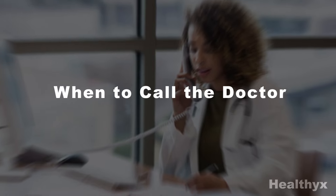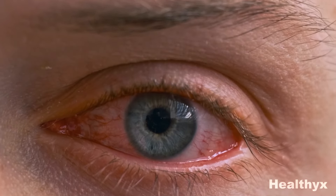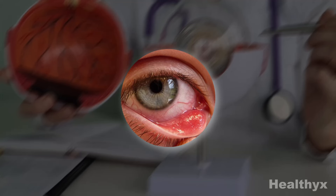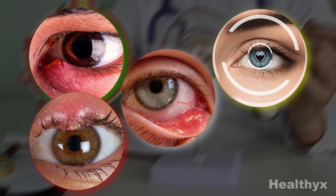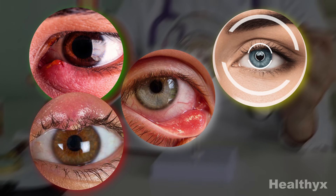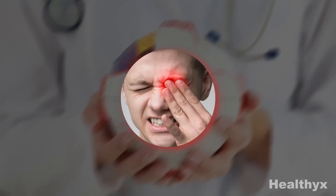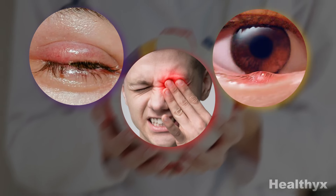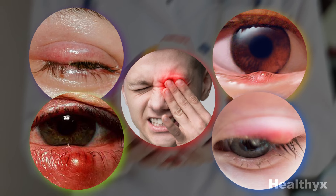When to call the doctor: an infection on your eyelid has the potential to reach your eye socket or your eye, increasing your risk of vision loss. Seek medical attention if the sty gets worse quickly, the sty bleeds, your vision is affected, the sty spreads to your eyeball, the skin around your eye or cheeks becomes red and swollen, your eye — not just the eyelid — hurts, you can't open your eye from the swelling, you get recurring styes, your eyelid turns red, or your sty gets very large.